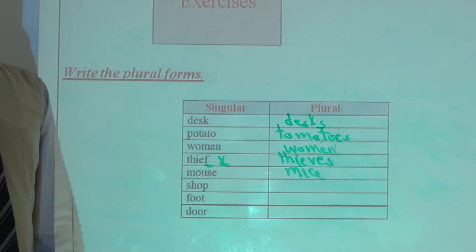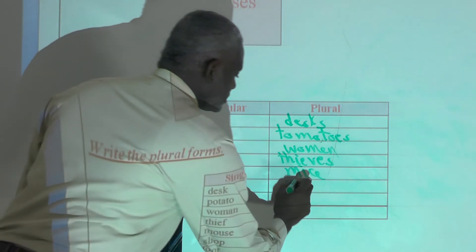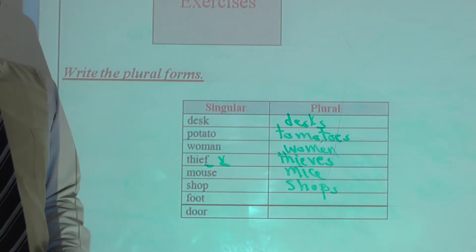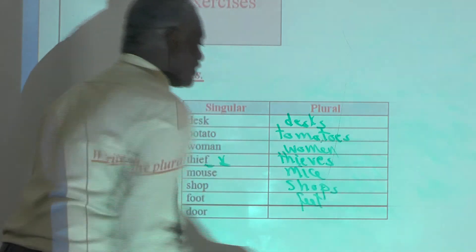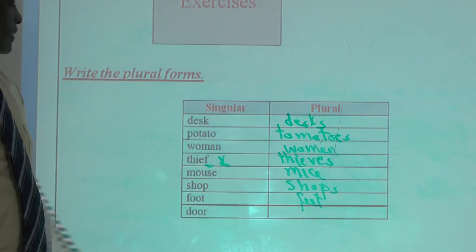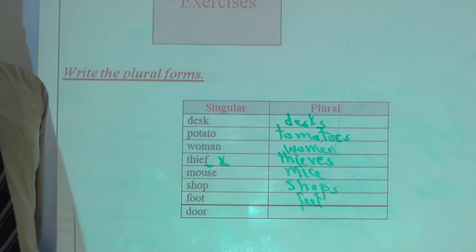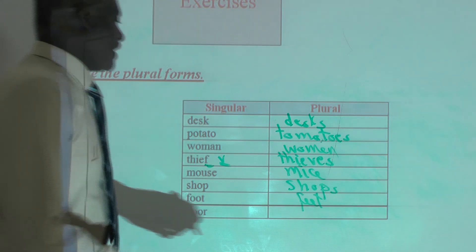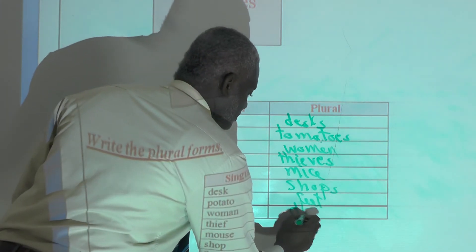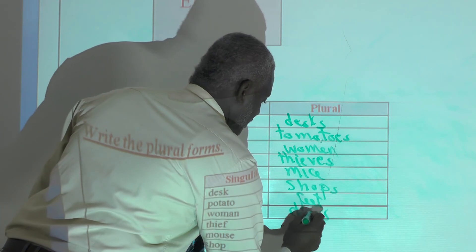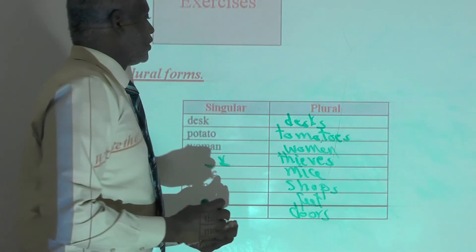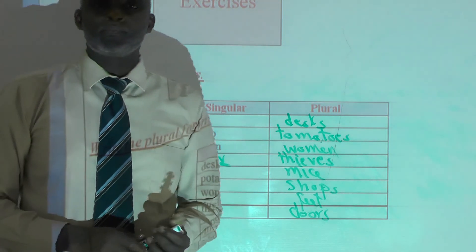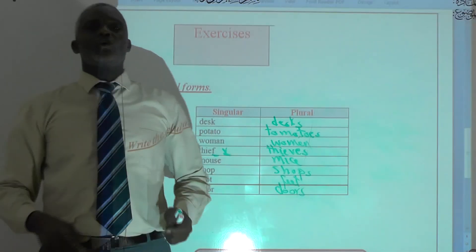Shop — shops. We add s. Feed — this is an irregular plural. Door — by adding only s to the end: doors. Is it clear? Okay, it is clear. Now we finish our lesson.